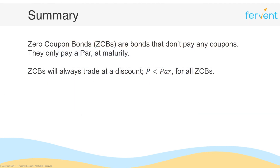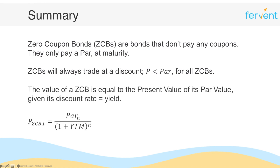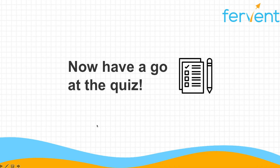In summary, we learned that zero coupon bonds are bonds that don't pay any coupons — they only pay a par at maturity. Given this, zero coupon bonds will always trade at a discount, meaning price P is always less than par. Finally, the value of a zero coupon bond equals the present value of its par value, with the discount rate equal to its yield: price equals par at time n divided by (1 + YTM)^n. Have a go at the quiz and I'll see you in the next video.